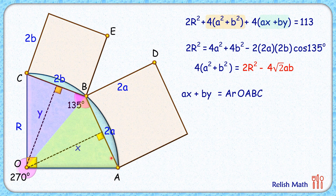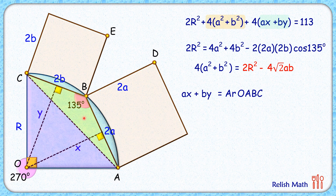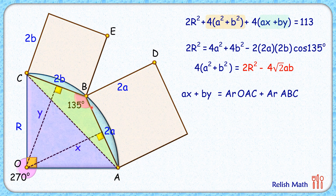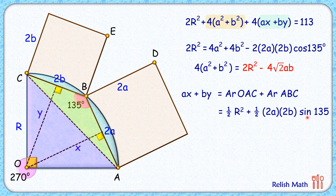We can split quadrilateral OABC into two triangles: triangle OAC and triangle ABC. The area of triangle OAC = ½·r·r = ½r², since base and height are both r. For triangle ABC, using the formula ½·(2a)·(2b)·sin(angle), with angle = 135° and sin135° = 1/√2, we get the area as √2·ab. So ax + by = ½r² + √2·ab.